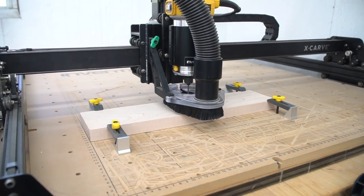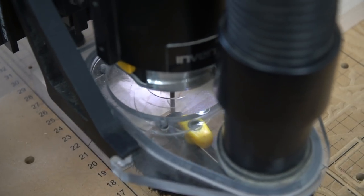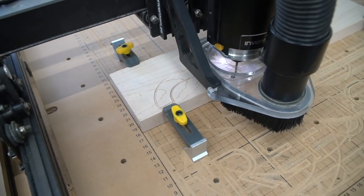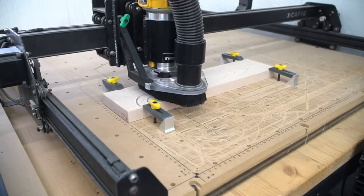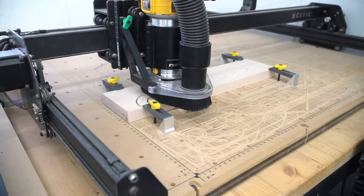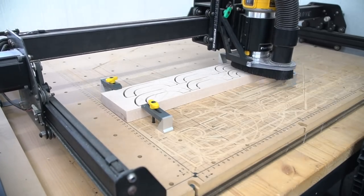We are going to use our X-Carve machine to carve out maple drawer pulls. We have a link to the project page below where you can get the file to carve your own. These are super easy to make and only took about five minutes to carve. We have a bunch of projects using this machine linked in a playlist below if you want to see more.